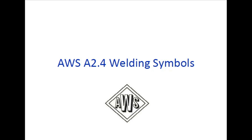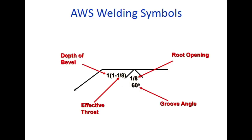Welcome. Today's topic is Section 8, which we already discussed. In the previous video, I said I would explain the welding symbol as per AWS EA 2.4. The AWS welding symbol defines depth of bevel - the effective throat is 1/8 inch. All measurements are in inches. 1/8 is the root face opening, 60 degrees is the groove angle.